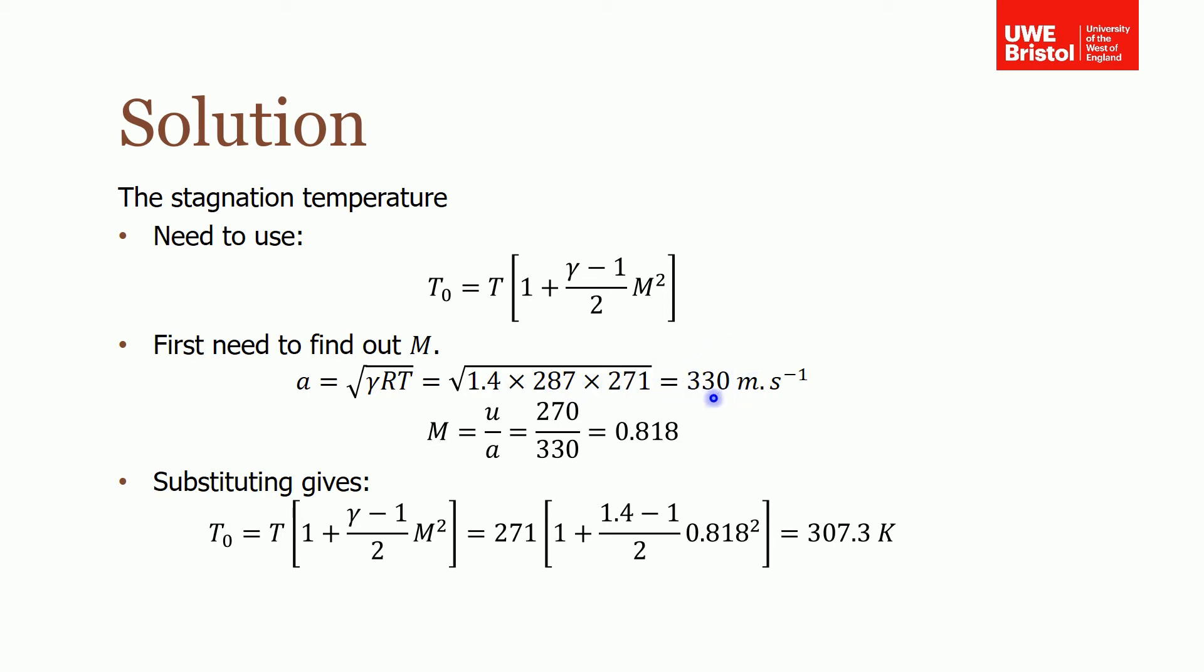This gives us a sonic velocity of 330 metres per second. Then divide our actual velocity, 270, by the sonic velocity, giving a Mach number of around 0.82.